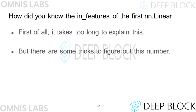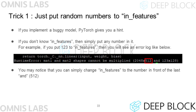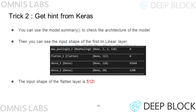I will explain how to figure out which number to put in in_features of the first linear layer. First, you can put a random value in in_features. If you put a random natural number and run the program, it prints an error log showing the shape of the matrix. The value in front of 'and' is the output shape of the flattened layer, so you can set this value as the input shape of the linear layer. The second method is to utilize Keras: design a model in Keras, call the model.summary method, check the output shape of the flattened layer, and put it as the in_features value of the PyTorch linear layer.